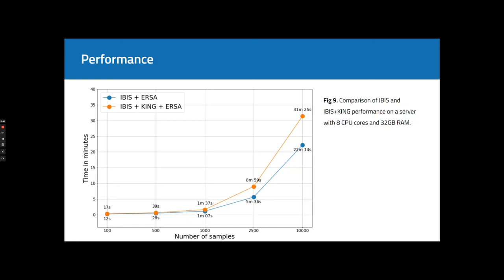So, our pipeline is fairly fast and it can work with the dataset of size of 10,000 samples or more in a sensible amount of time. And adding King as an option for close relatives does not hurt the performance significantly.